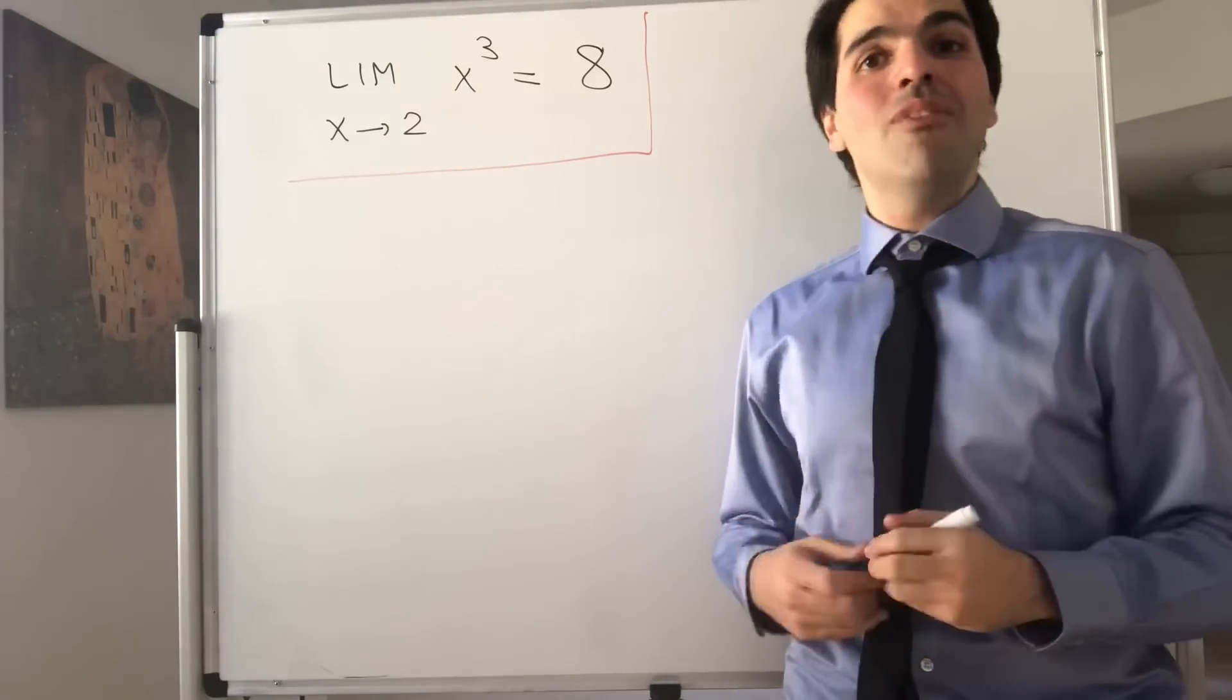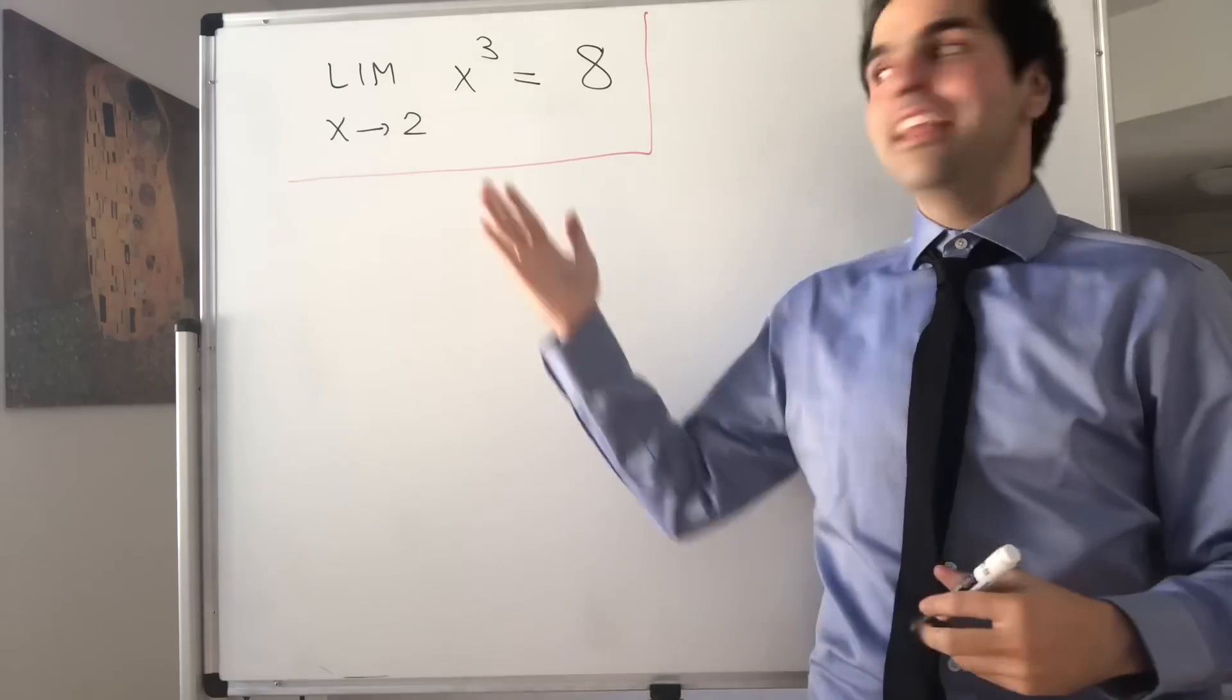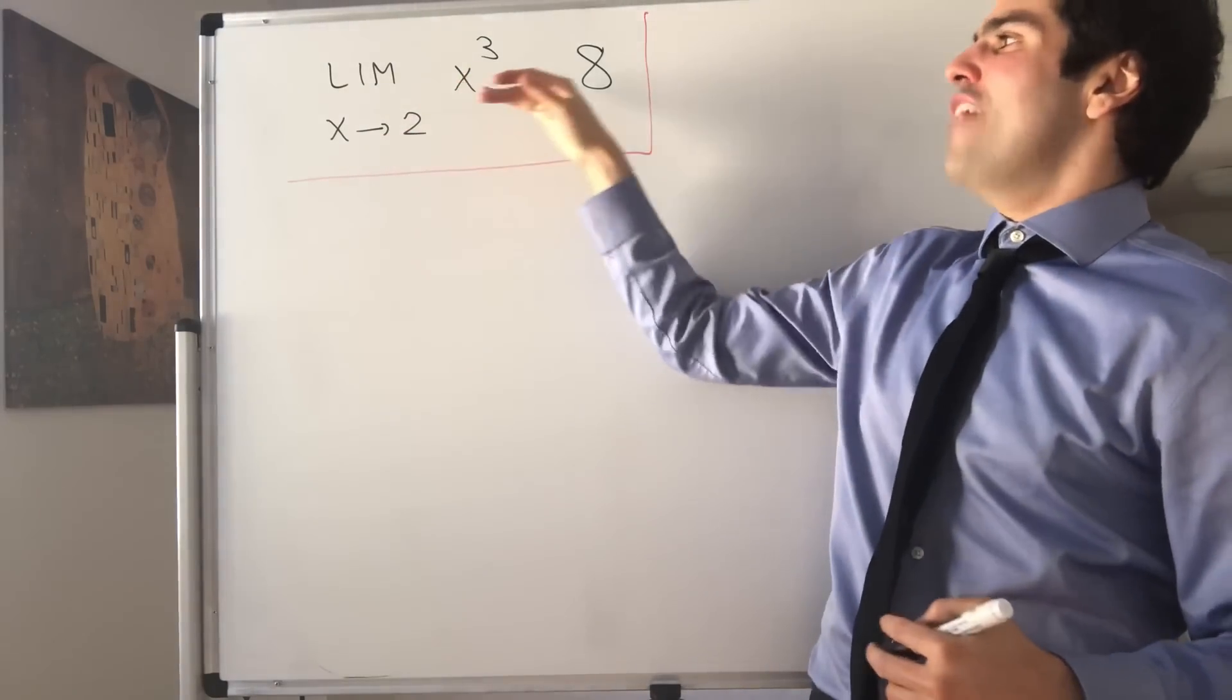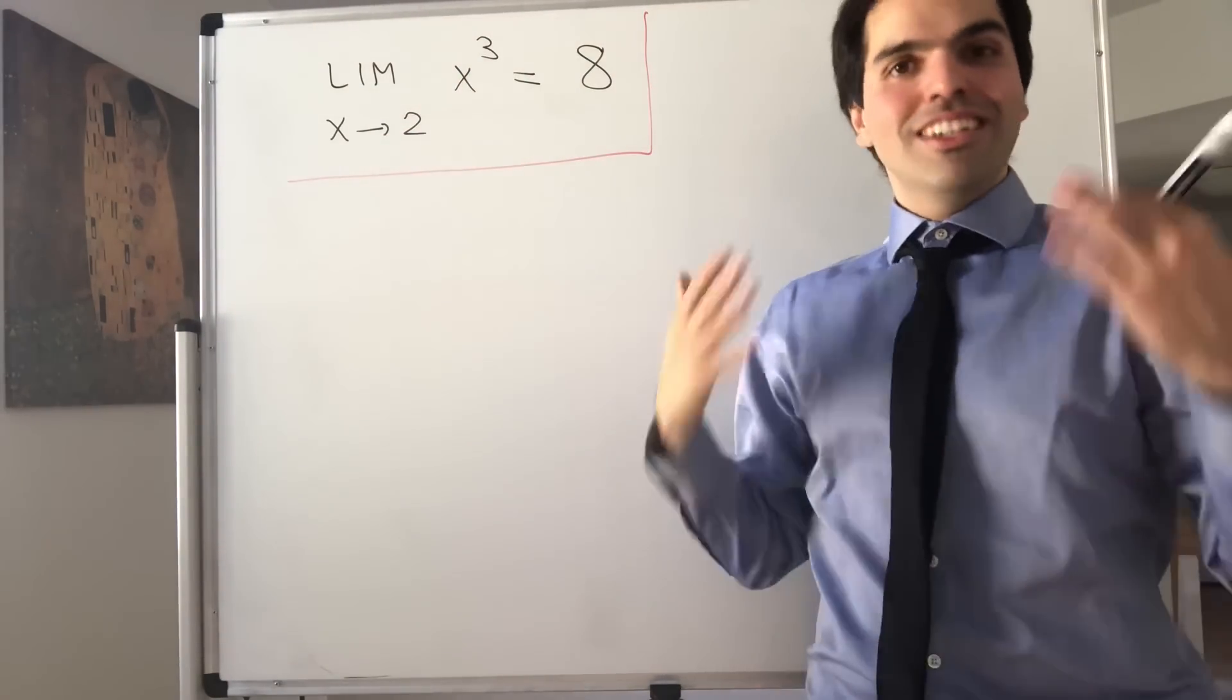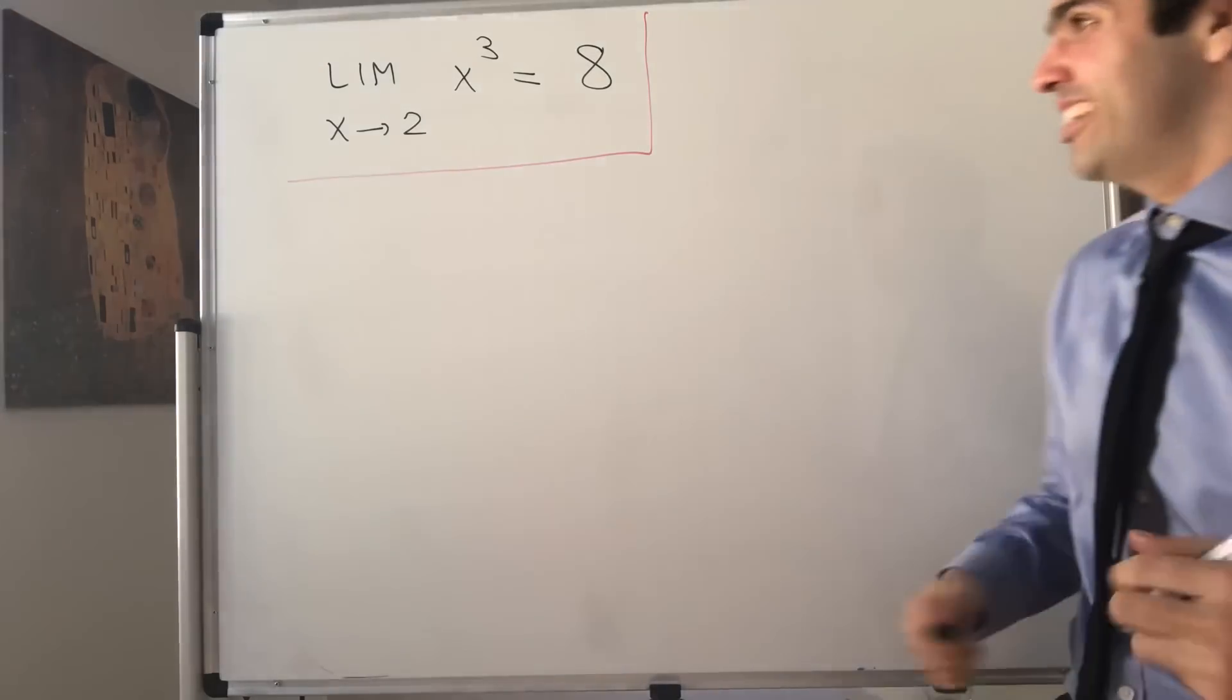Alright, thanks for watching. Today I want to use the epsilon-delta definition of a limit to show that the limit as x goes to 2 of x cubed equals 8, just to show you that epsilon-delta can be quite a lot of fun.